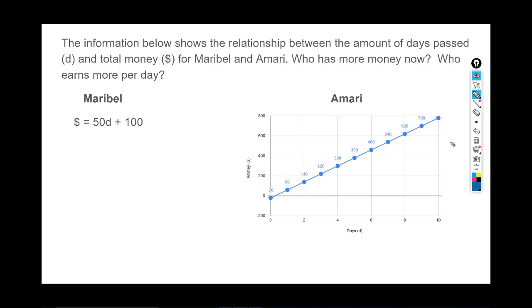It starts by asking who has more money now, so right now. Let's assume that we're starting at zero. When we think about linear functions, we typically show them as y equals mx plus b, where m is the slope and b is the y-intercept or where we begin. So when it says who has more money right now, we're talking about the y-intercept b.